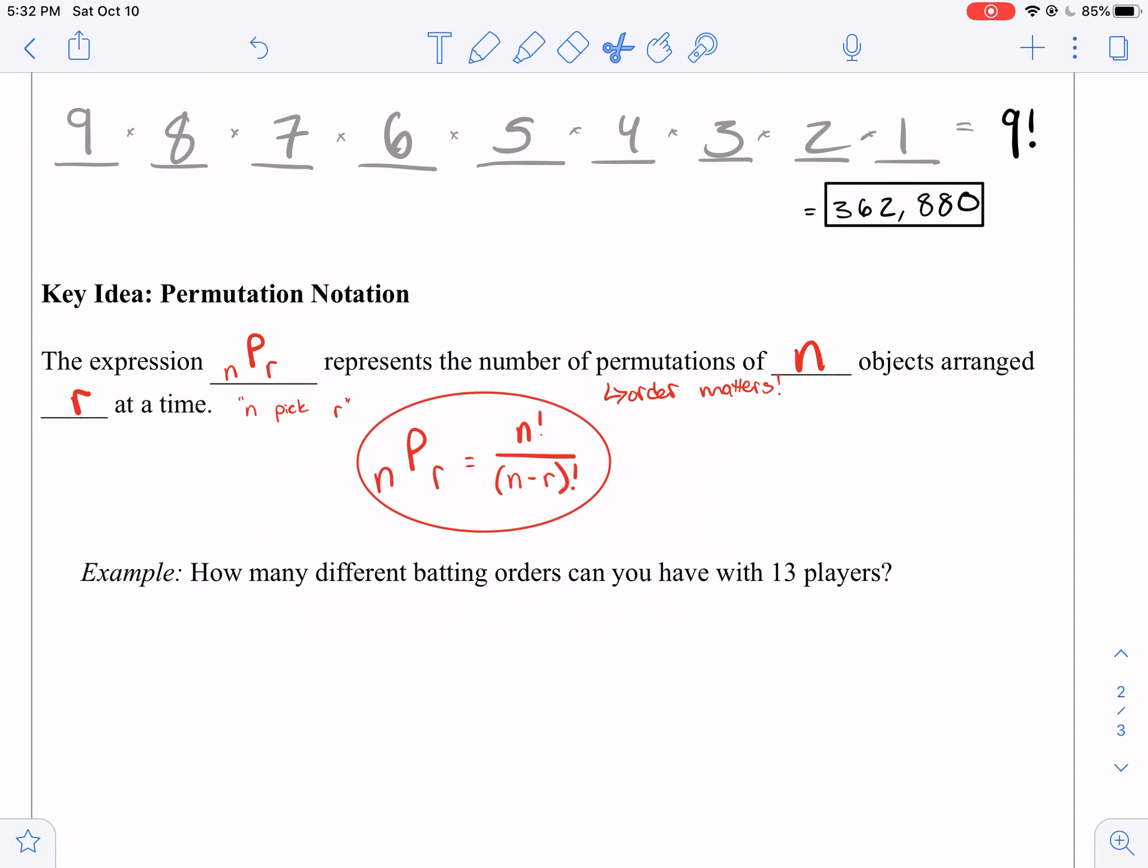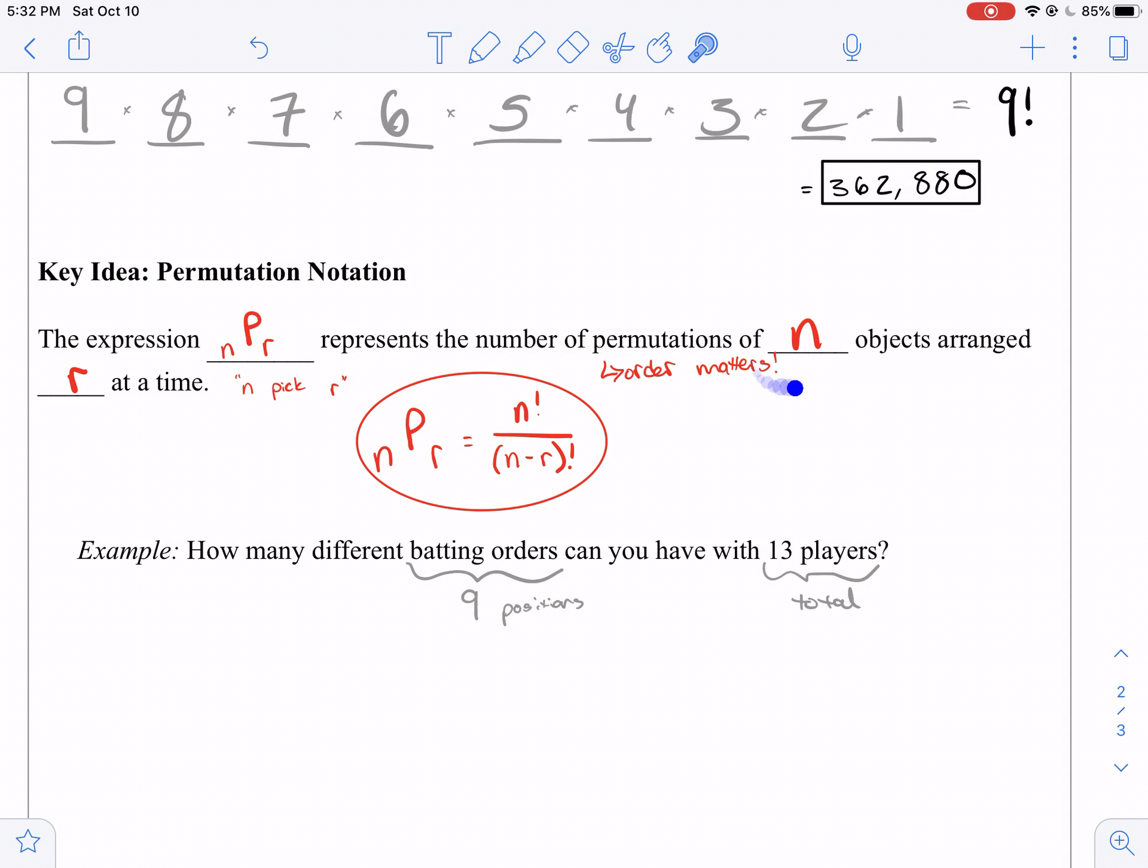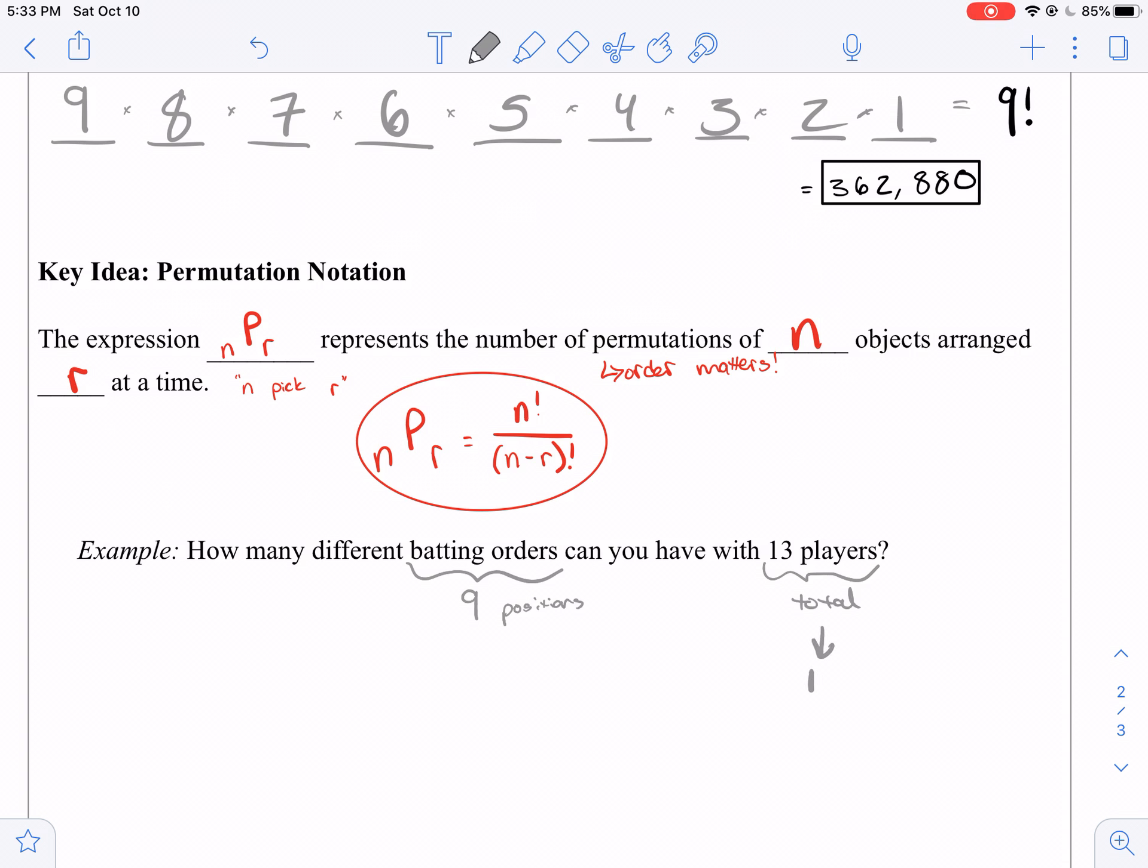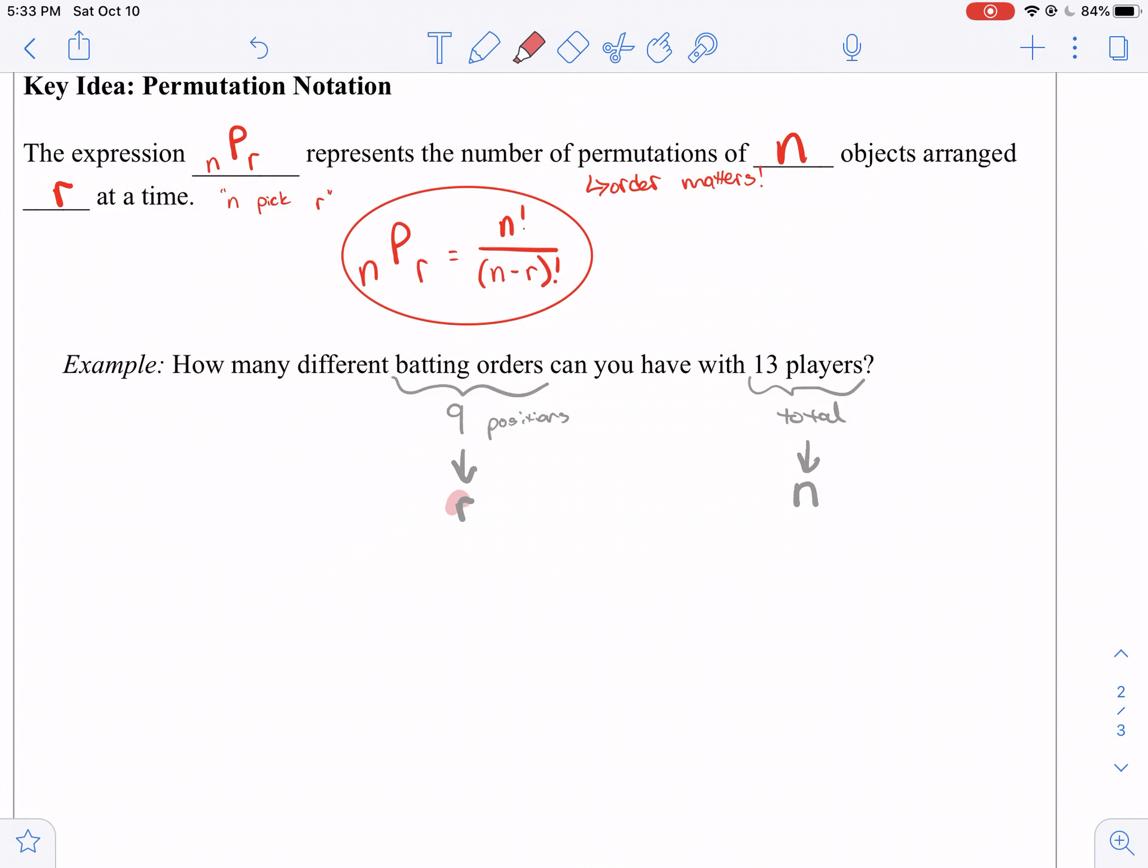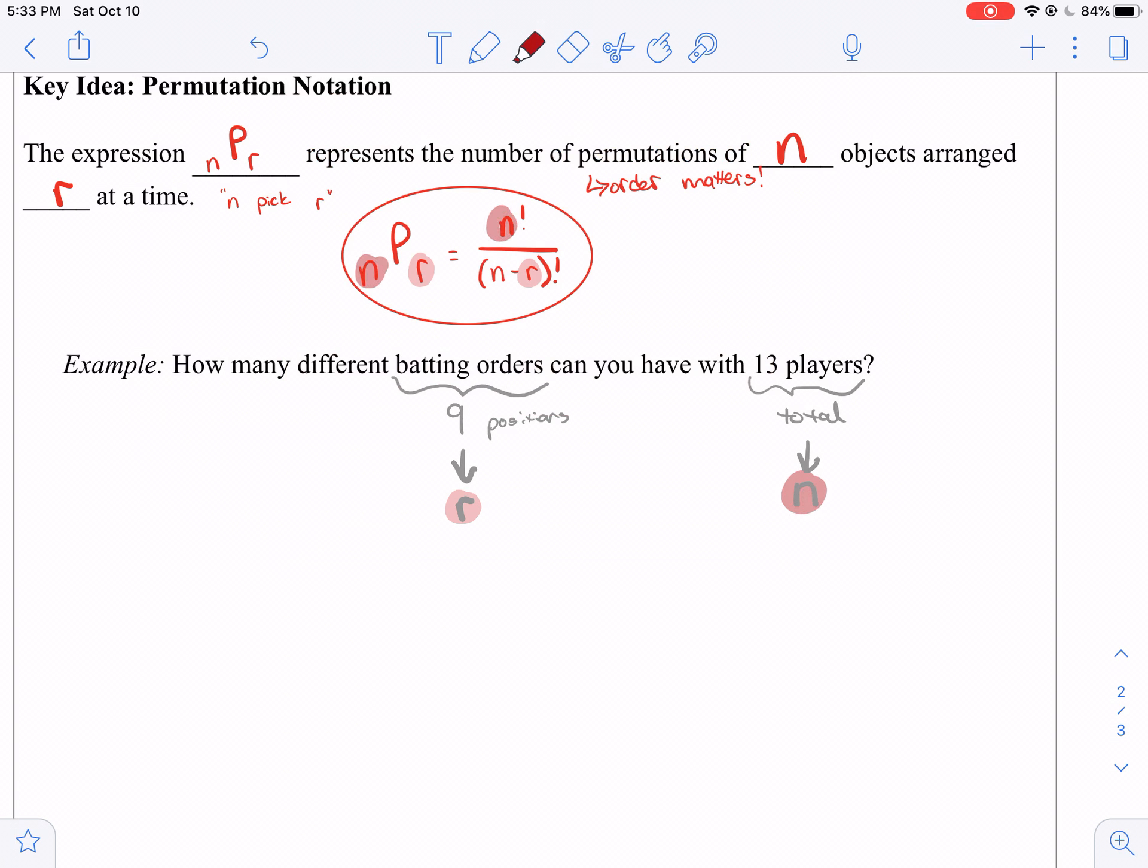So let's say that we have some extra players on our baseball team, which is a good life choice to have, in case someone gets injured or someone is sick or whatever. You still want to calculate batting orders. So that's going to be nine positions. But this time we're picking from 13 players. So here, 13 is going to be our N value because we are arranging 13 people. We're picking from 13 people. So this will be our N. And then we're picking nine of them at a time. So nine will be our R.